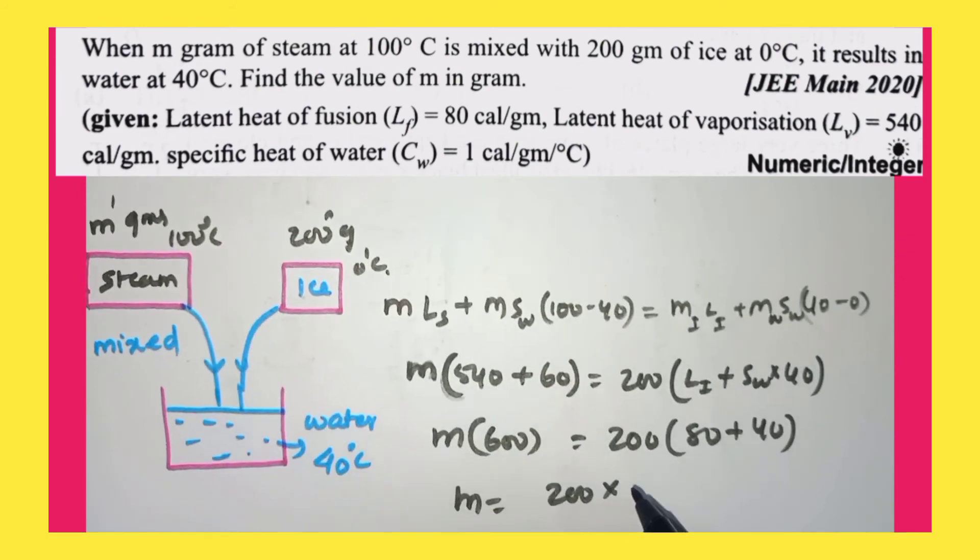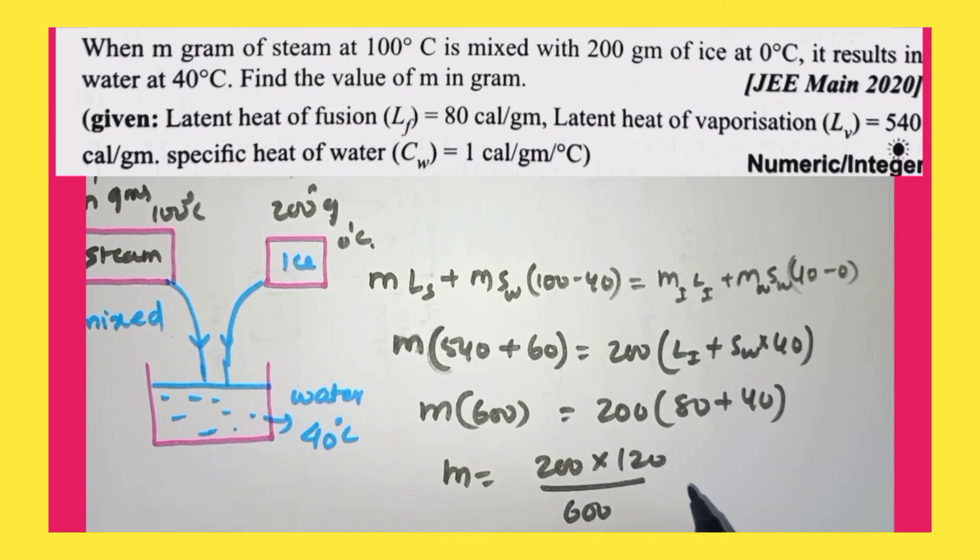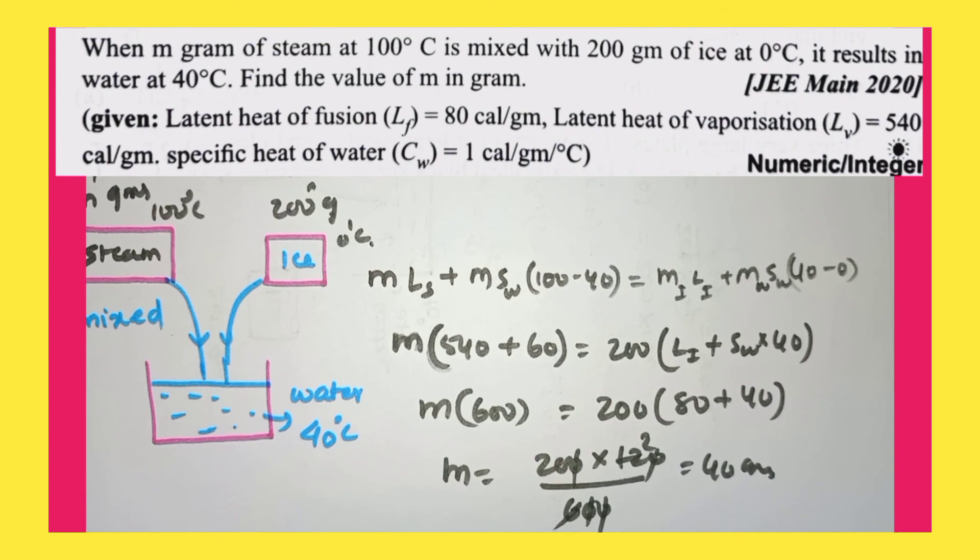So m is going to become 200 into 120 by 600. So how much you are going to get here now? This is getting cancelled, this zero gets cancelled, 6, 1, 6, 2, 12. So 40 grams you are getting as the mass. Thank you very much, this is a very simple question, thank you very much.